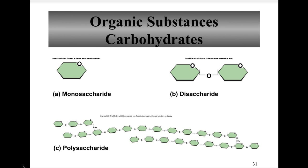In disaccharides, two monosaccharides are covalently bonded together via a dehydration synthesis reaction. A polysaccharide consists of many glucose molecules covalently bonded together — for example, starch is the plant storage form of carbohydrate, while glycogen is the animal storage carbohydrate. Glycogen is stored in the liver and in some skeletal muscle.